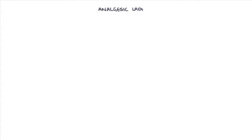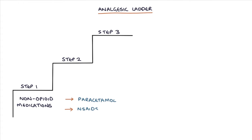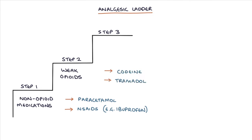Let's talk about the analgesic ladder. The WHO Analgesic Ladder was originally developed to help manage cancer-related pain and is also often used for acute and chronic painful conditions. The idea is that patients with mild pain start on the first step, and when the pain is more severe or does not respond to the lower steps, higher steps can be used. Step one involves non-opioid medications such as paracetamol and NSAIDs like ibuprofen. Step two involves weak opioids such as codeine and tramadol. Step three involves strong opioids such as morphine, oxycodone, fentanyl, and buprenorphine.